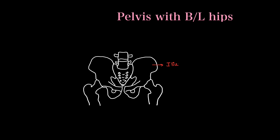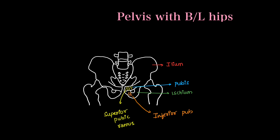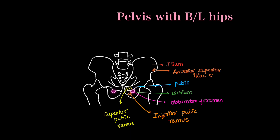Now we will see these parts on the illustration along with their sub-parts. This is the ilium, a blade-like structure. This is the pubis, and posteriorly this is the ischium. In the pubis we have the superior pubic ramus, and inferiorly the inferior pubic ramus. The hole in the center is called the obturator foramen. This eminence anteriorly on the iliac bone is the anterior superior iliac spine, an important superficial landmark, and this is the iliac crest.